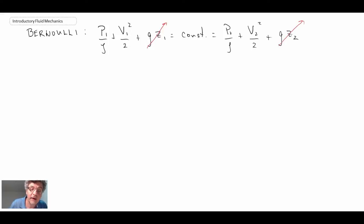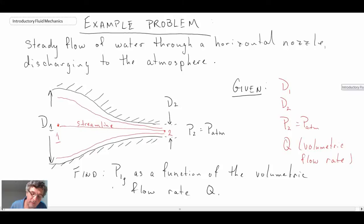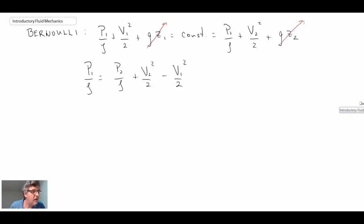If you recall the problem statement, we want to find P1 gauge as a function of volumetric flow rate, so we want to deal with gauge pressure, not absolute atmospheric plus gauge. We're going to deal only with gauge pressure.